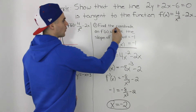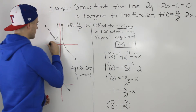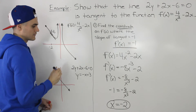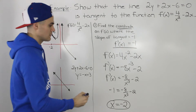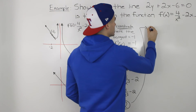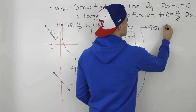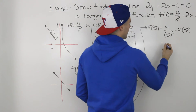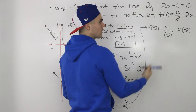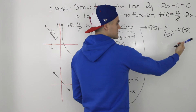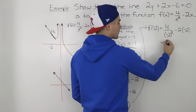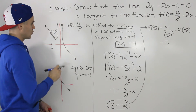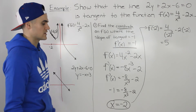We found the x value, but we need the full coordinate, so we also need the y value. We plug negative 2 into the function: f of negative 2 equals 4 over negative 2 squared minus 2 times negative 2. Negative 2 squared is 4, so 4 divided by 4 is 1, minus 2 times negative 2 gives 1 plus 4, which equals 5. So at the coordinate negative 2 and 5, the slope of the tangent on this function is equal to negative 1.